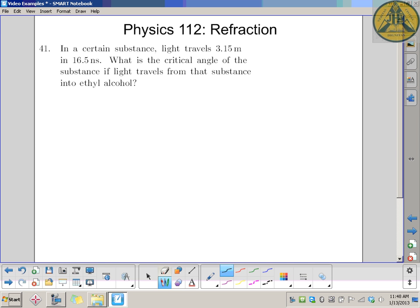And another refraction question, grade 11 physics, question 41 from your workbook. In a certain substance, light travels 3.15 meters in 16.5 nanoseconds. That's nanoseconds, nano meaning billionths, 10 to the negative 9. What is the critical angle of that substance if light travels from that substance into ethyl alcohol?